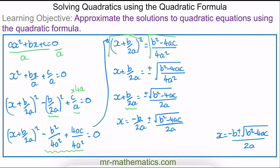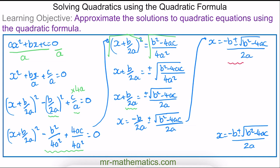Finally, I can write them as a single fraction: x = (−b ± √(b² − 4ac)) / 2a. This is how you derive the quadratic formula by completing the square. Now we're going to use this formula to solve quadratic equations.